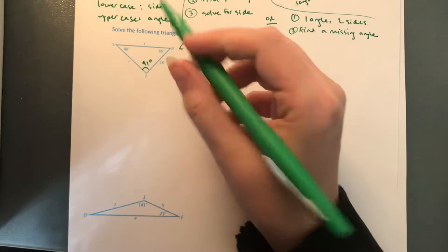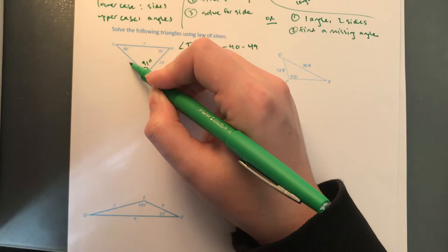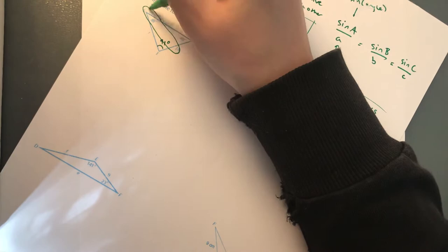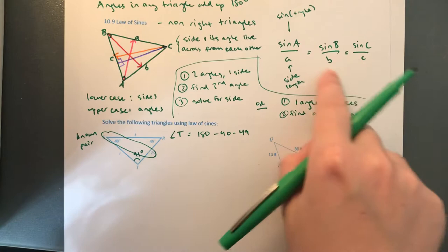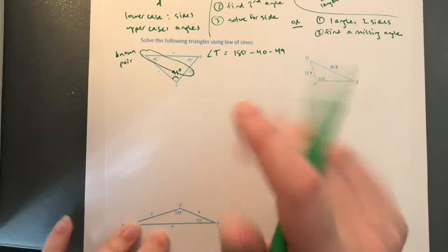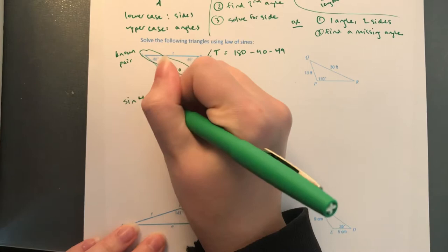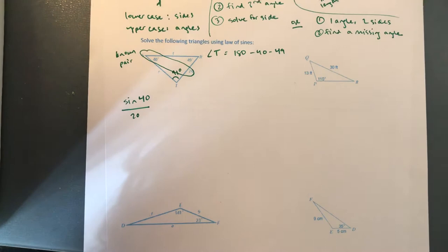In our triangle, 91 goes with little t — no, we don't know both. 49 goes with little r — nope. But 20 goes with 40 — that's our known pair. So our first proportion is sine 40 over 20. Our triangle isn't always labeled A, B, C — it can be any letters. So we can always use sine 40 over 20 as our known proportion when we need to.